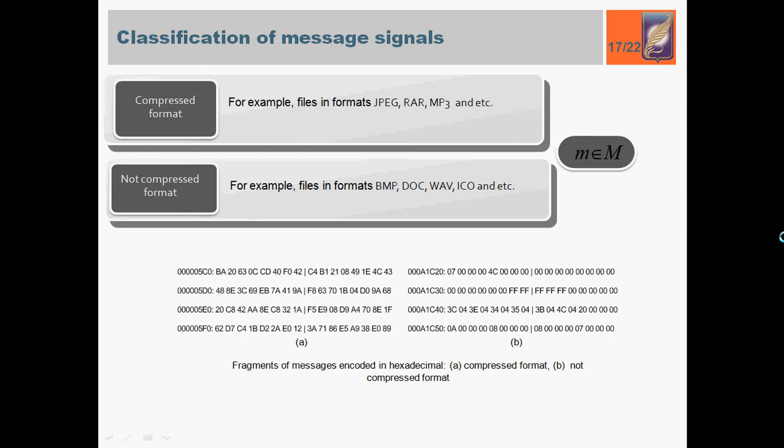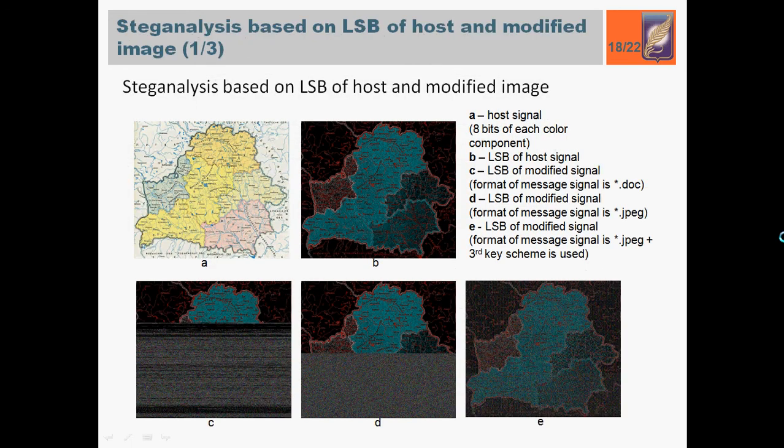The better analysis of LSB methods can be carried out by using so-called visual attack. Steganalysis is based on a visual LSB analysis of host and modified images. On pictures from B to E, only LSB of modified container is presented. All high-order bits were set to zero. On picture A, the initial host signal is presented. Its LSB is on picture B. On C and D, the embedded message can be easily detected in modified signal. In case of not compressed message signal, the LSB has pronounced structure. On picture E, it's shown how the using of third key schemes helps to resist the visual attack scheme. The key was used like function for distribution of message signal within the host signal. In comparison with D variant, the message signal cannot be easily detected.